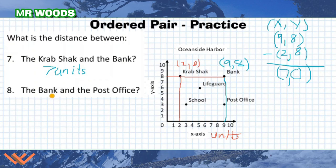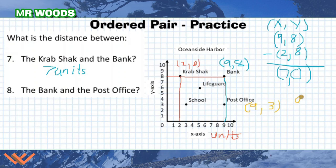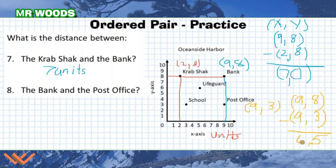Now let's take a look at the bank and the post office. The bank is at (9, 8) and the post office — counting over: x is 9, and y is 1, 2, 3 — so the post office is at (9, 3). This is a little different because now we're measuring distance in the y-direction. Subtracting: 8 minus 3 equals 5, and 9 minus 9 equals 0. So there's no change in the x-direction, but there is a change in the y-direction of 5 units.